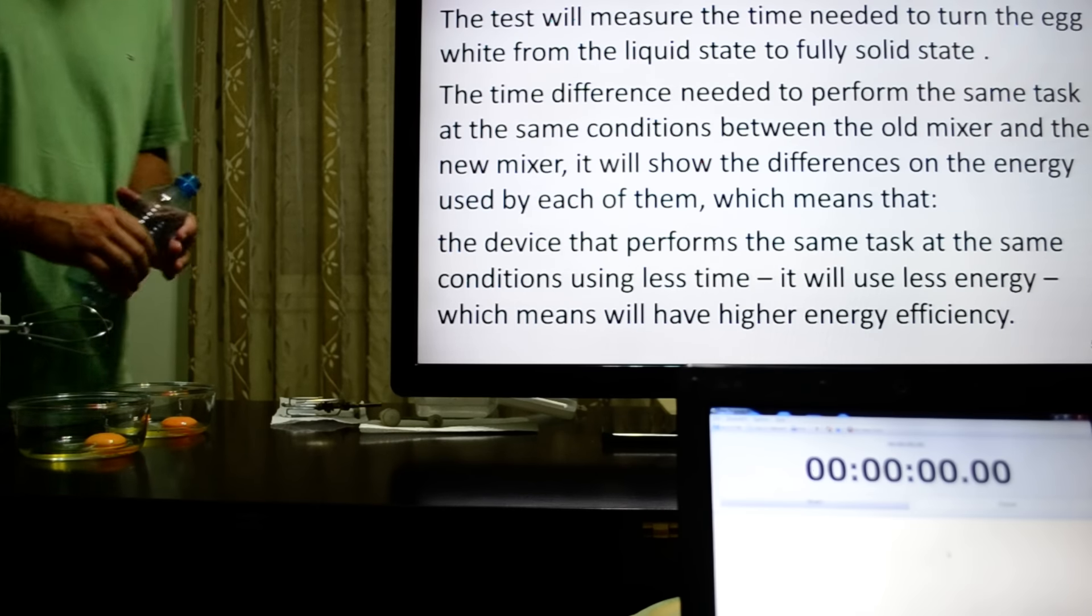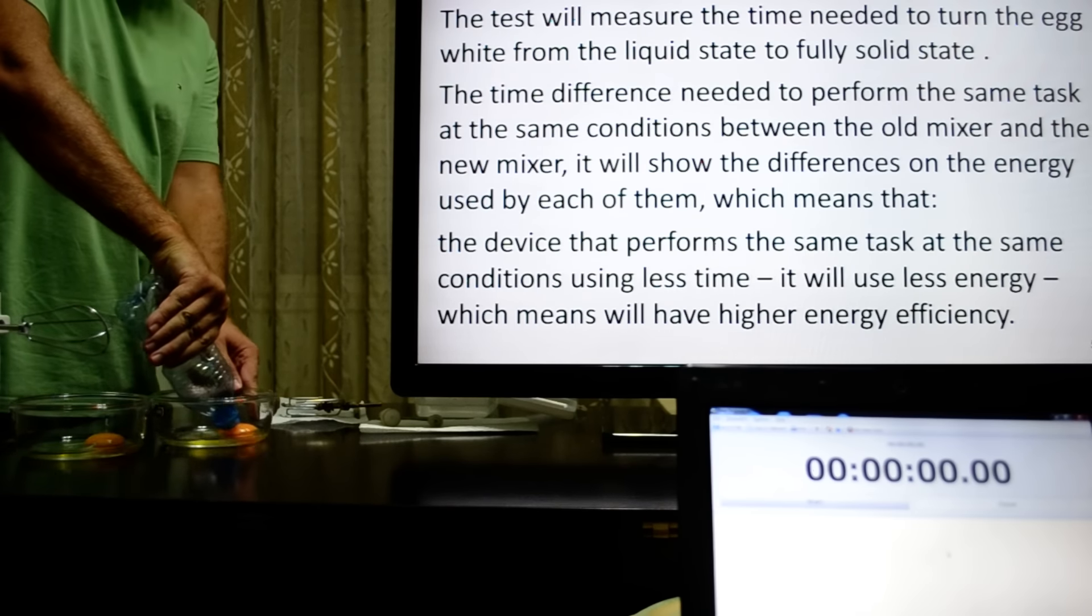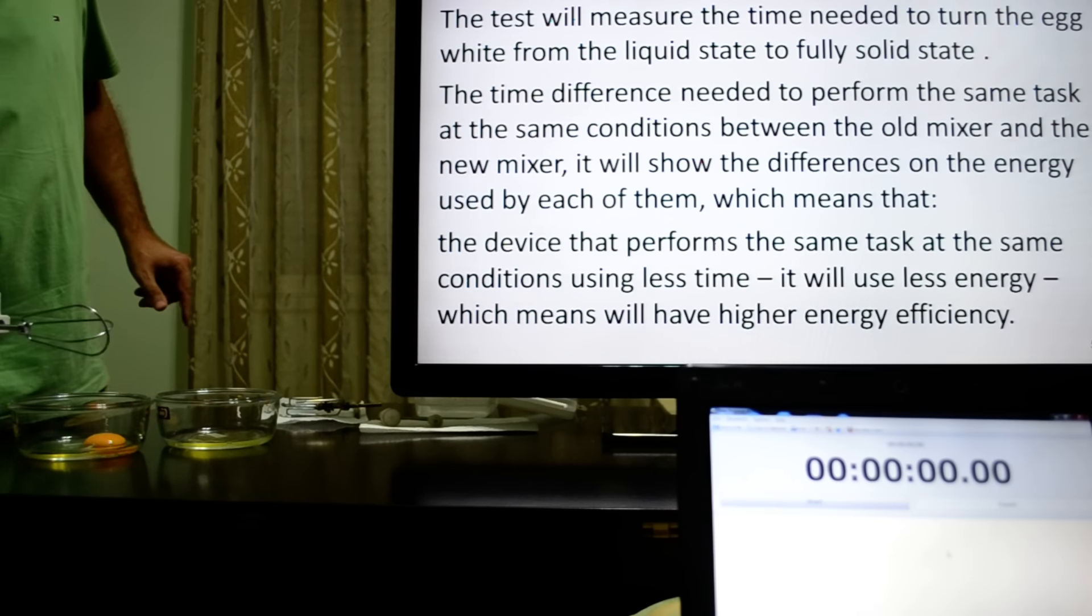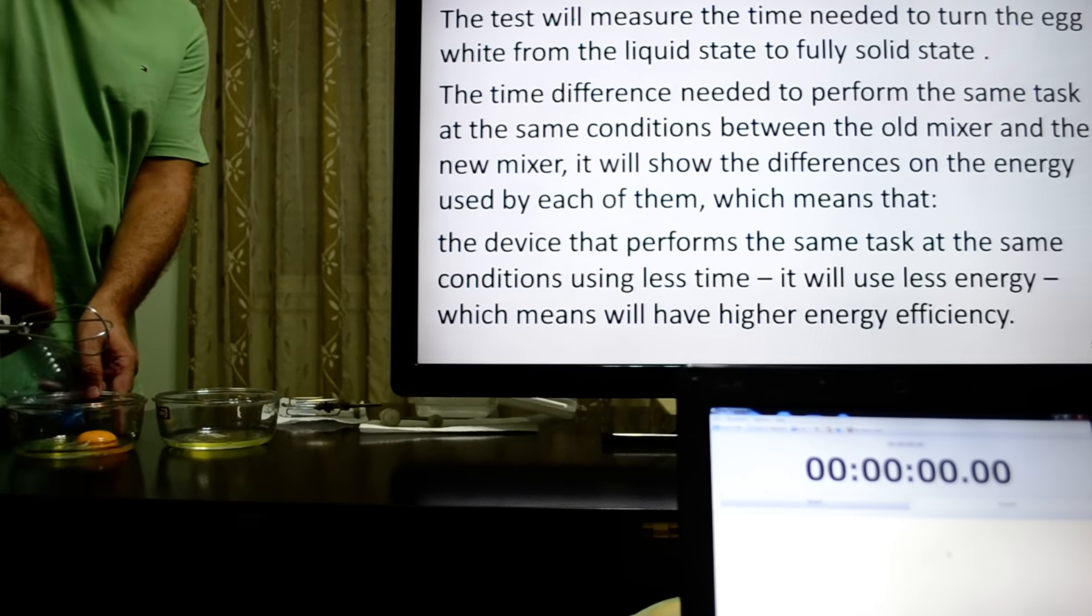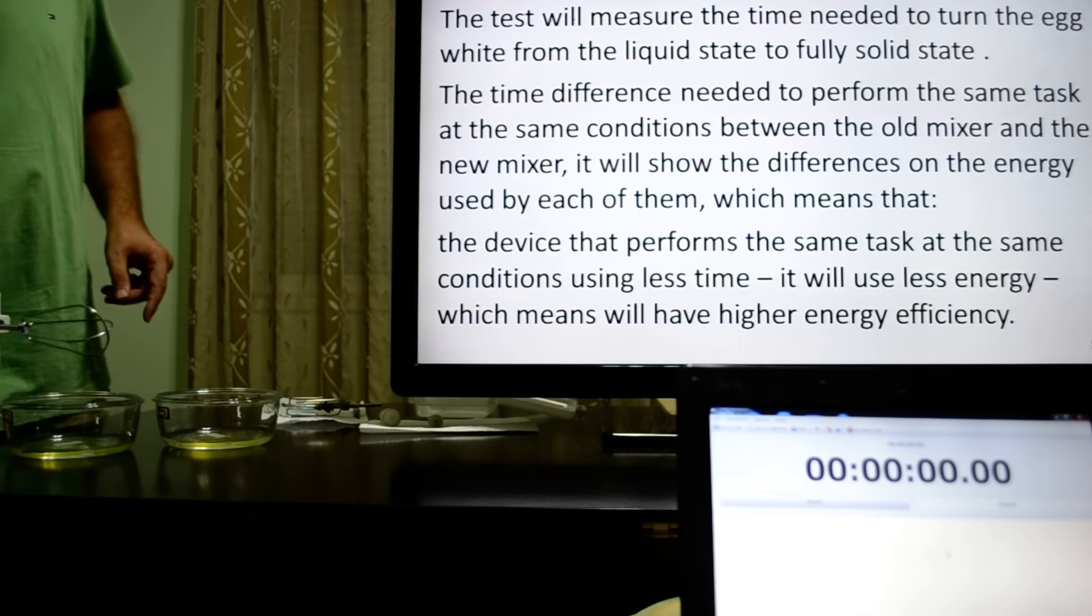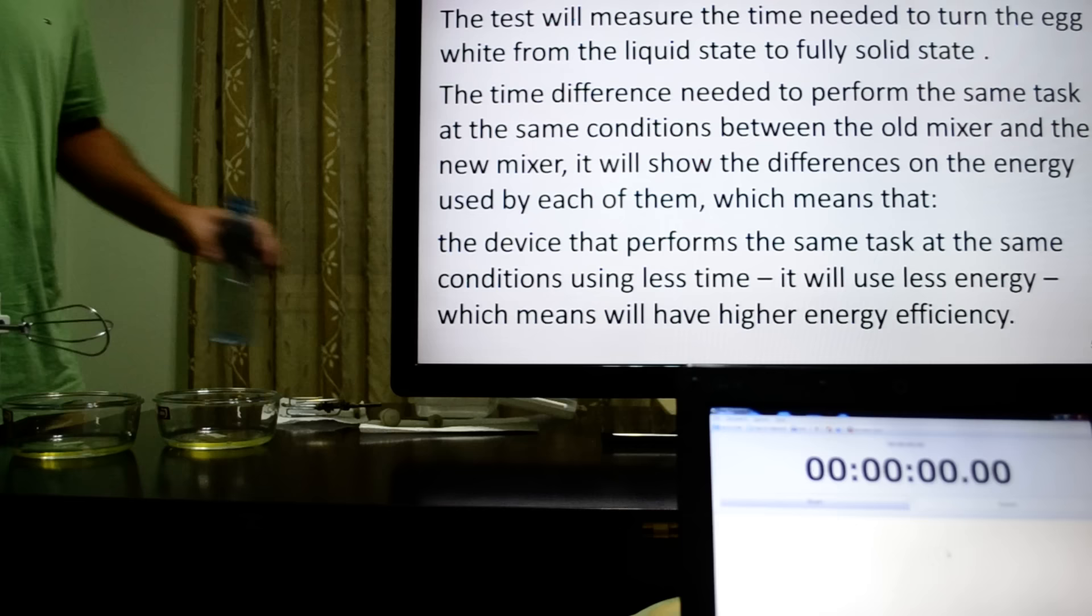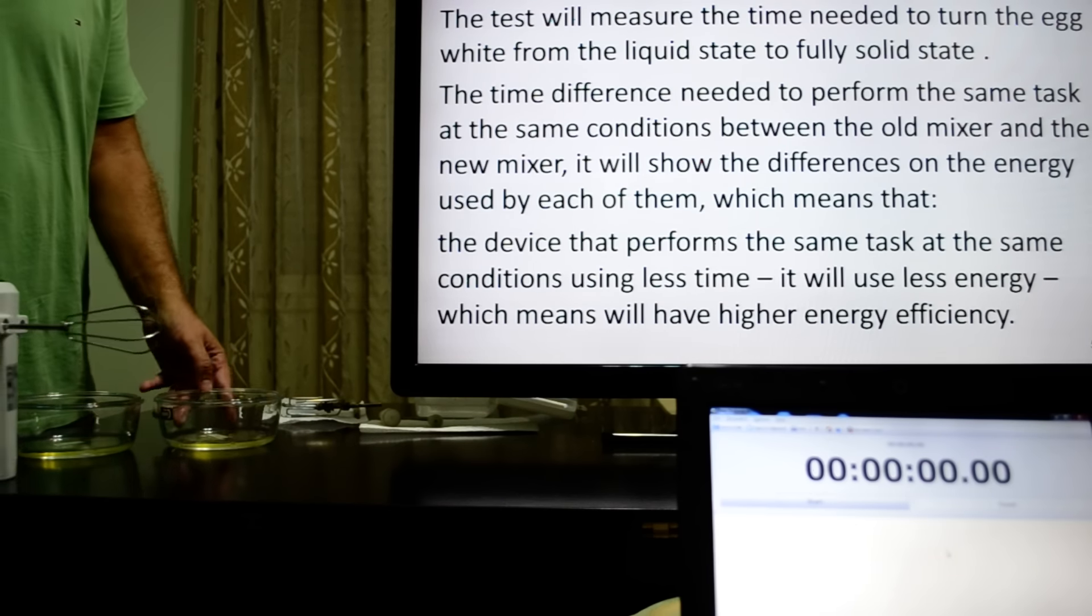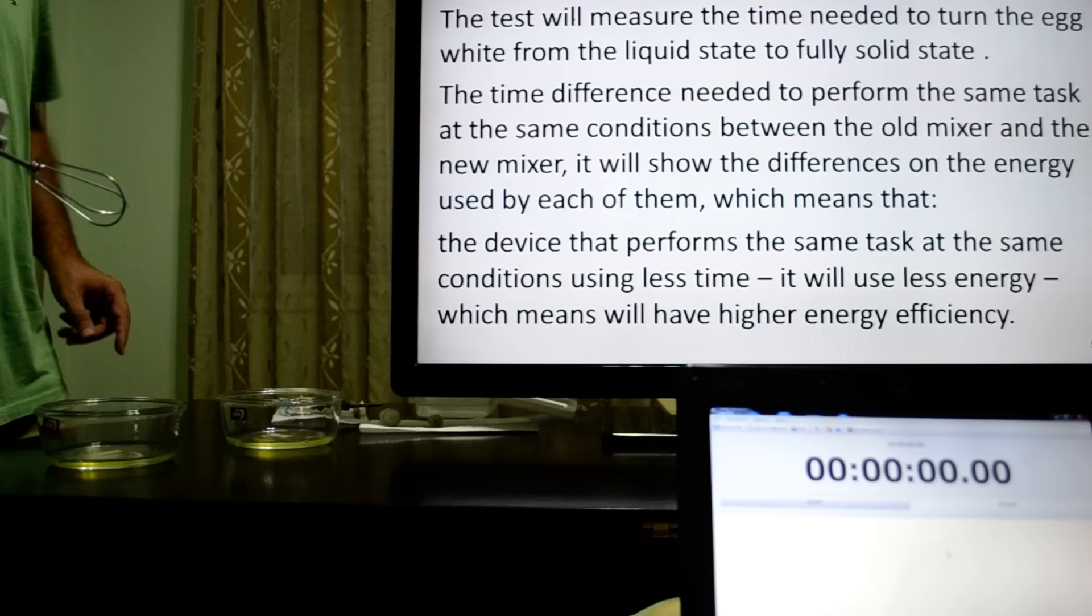The test will measure the time needed to turn the egg white from a liquid state to fully solid state. The time difference needed to perform the same task at the same conditions between the old mixer and the new mixer will show the difference in the energy used by each of them, meaning the device that performs the same task at the same conditions using less time will use less energy, which means it will have higher energy efficiency.